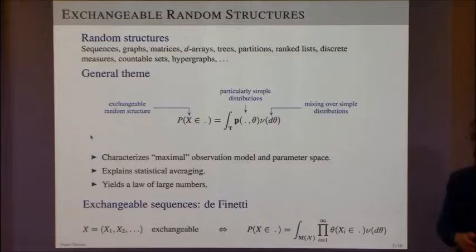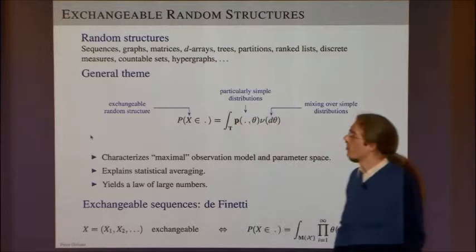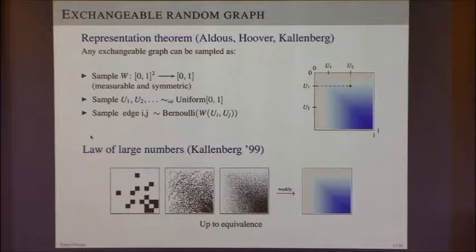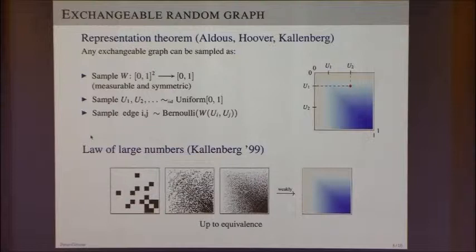This is exactly the basis of what Patrick was talking about this morning, and work of Peter Bickel from 2011 in the Annals, and some other recent work. This is the representation theorem for exchangeable graphs. If I have an exchangeable graph — an infinitely large random graph — its distribution is invariant under isomorphism. It doesn't matter which particular isomorphic instance of the graph I observe; any two isomorphic graphs have the same distribution.